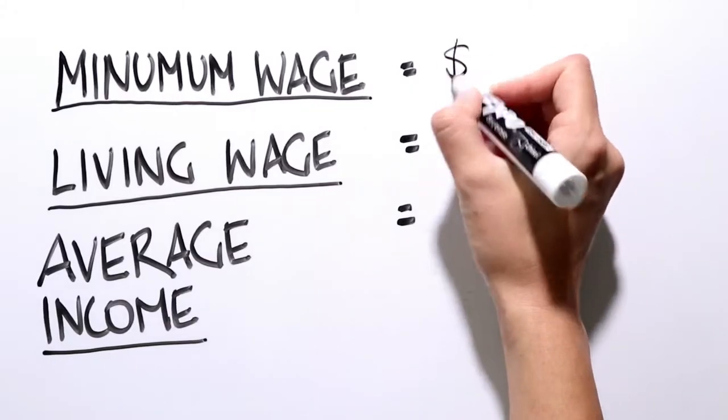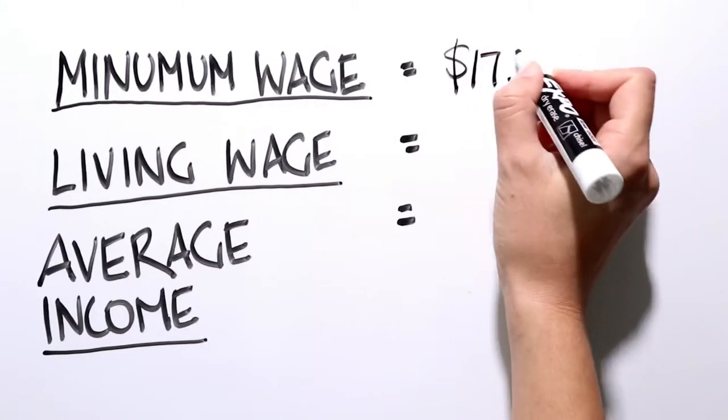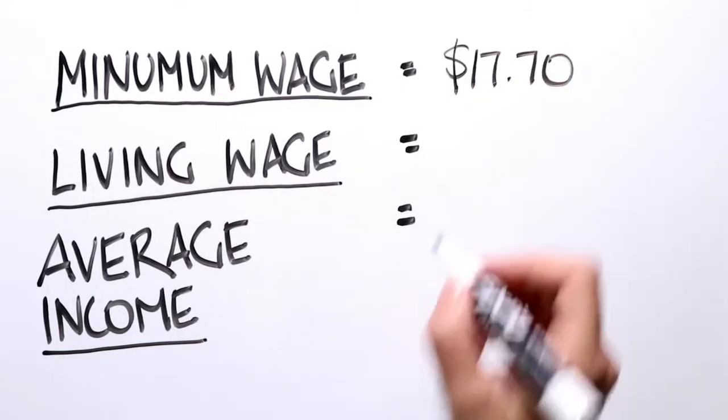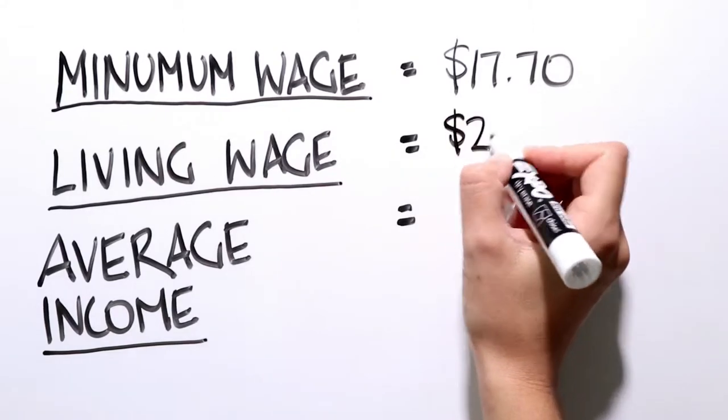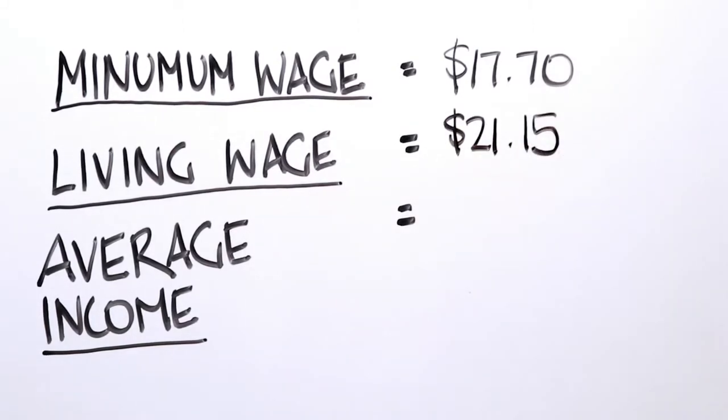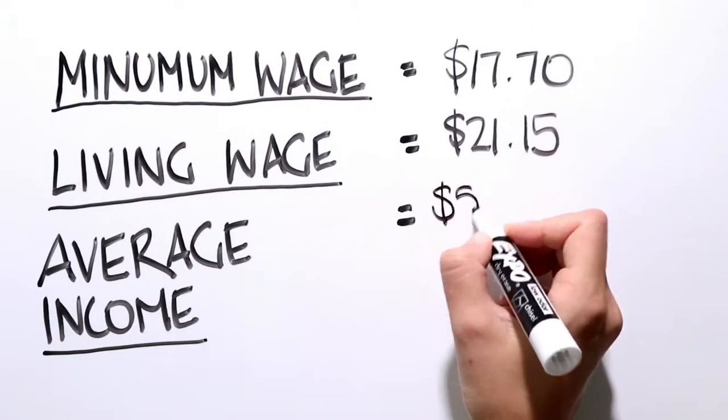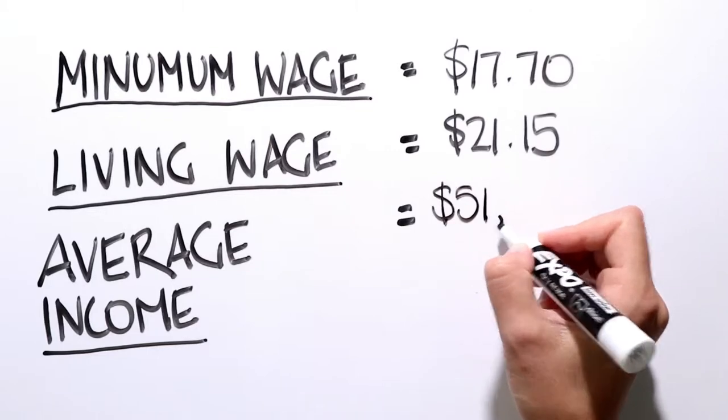The minimum wage for adults is $17.70 per hour before tax. The living wage is $21.15 per hour before tax. And the average income is about $51,000 per year before tax.